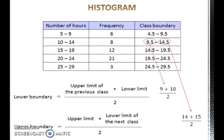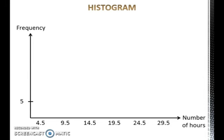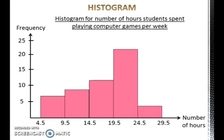This is how we find class boundaries. After the class boundaries are found, plot the class boundary on the horizontal axis and the frequency on the vertical axis. Then draw a bar for each class with the height corresponding to its frequency. Note that for a histogram, the bars must be close to each other. Lastly, write the title of the histogram.